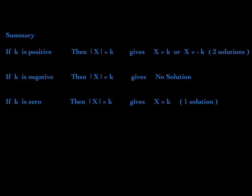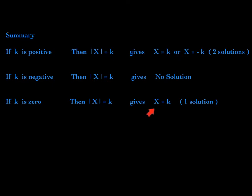Here is a summary: if k is positive, the absolute value equation gives two solutions — x equals k or x equals negative k, a compound equation. If k is negative, the absolute value equation has no solution, because the absolute value of any expression cannot be negative. If k is zero, the absolute value equation has only one solution — set the expression equal to zero and solve. So an absolute value equation has either two solutions, one solution, or no solution.